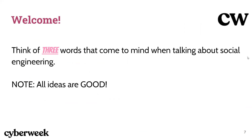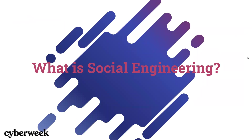We just want to get your brains thinking about the topic we'll be discussing. So now that you've had some time to think about what social engineering is, let me tell you the definition. Social engineering can be described as the psychological manipulation of people that leads them to revealing confidential or personal information and that can lead them to perform actions unknowingly.